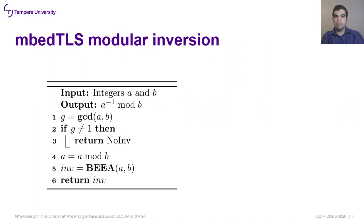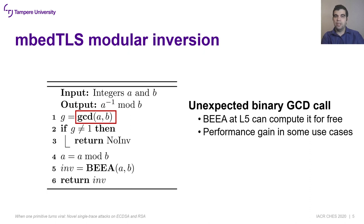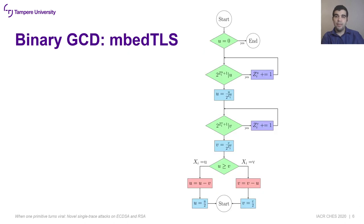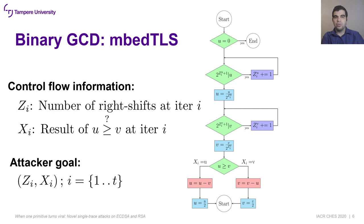The implementation of the modular inversion primitive in MBTLS follows specific steps. Note that there is a GCD computation before the actual inversion is computed using the binary extended algorithm. This property allows an adversary to develop a side-channel attack against the binary GCD primitive and reproduce it for every GCD or modular inversion computation in this library. The control flow information of this algorithm can be encoded using two variables, ZI and XI.